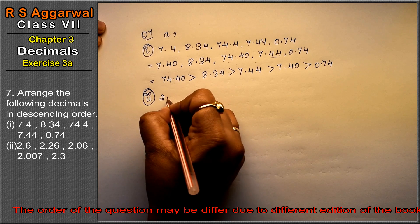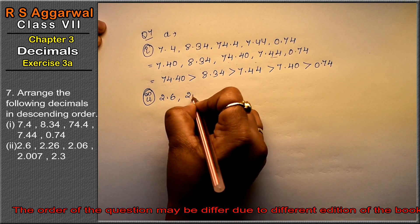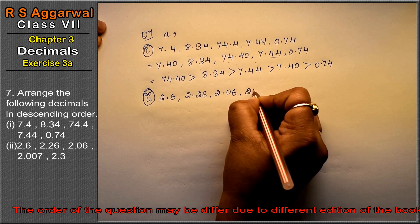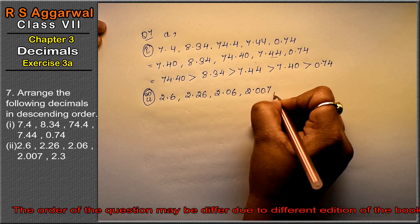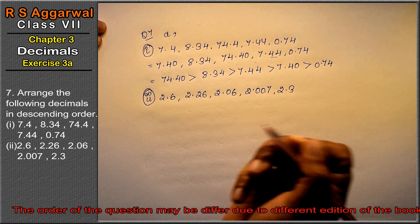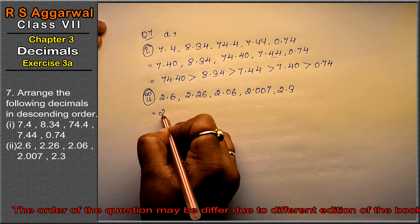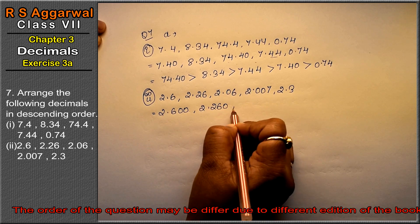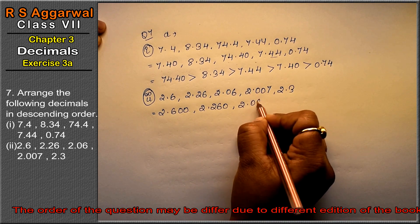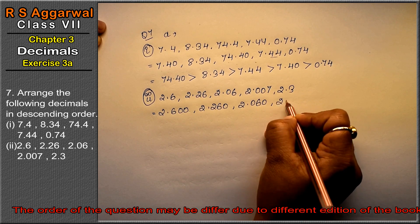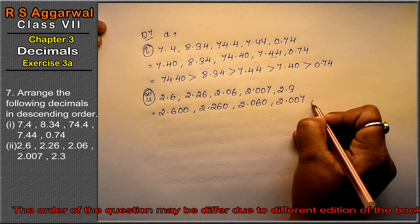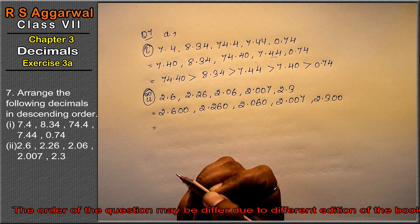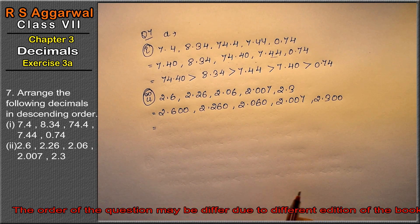Now, second part is 2.6, 2.26, 2.06, 2.007, and 2.3. Converting to like fractions: 2.600, 2.260, 2.060, 2.007, and 2.300.